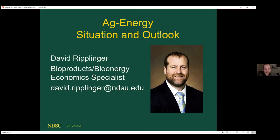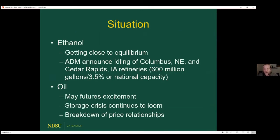Dave Ripplinger, bioenergy economic specialist with NDSU Extension. The corn ethanol industry in the U.S. is actually getting close to equilibrium — we're getting to the end of the beginning in terms of the industry's response to COVID and declining gasoline use. The biggest news in the last week is that ADM is going to temporarily idle two very large corn ethanol plants: one in Columbus, Nebraska, and one in Cedar Rapids, Iowa, each over 300 million gallons capacity. Combined, they're about 3.5% of national capacity. ADM expects them to be offline for about four months.